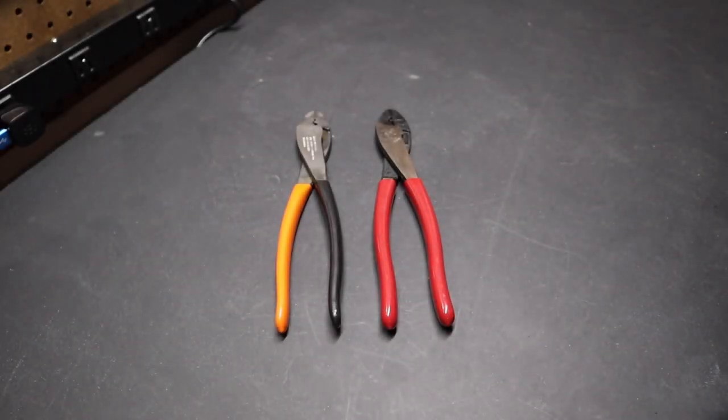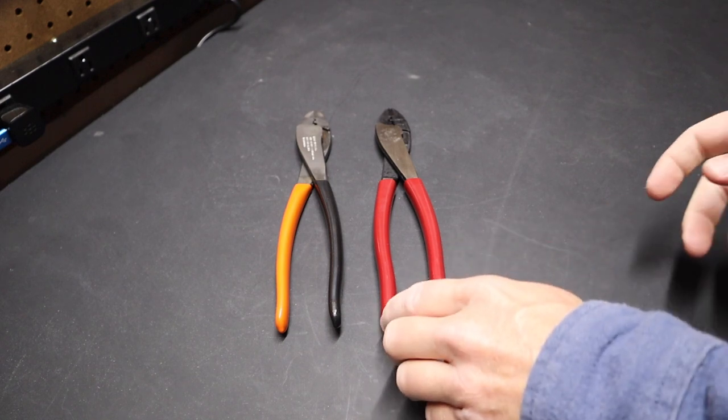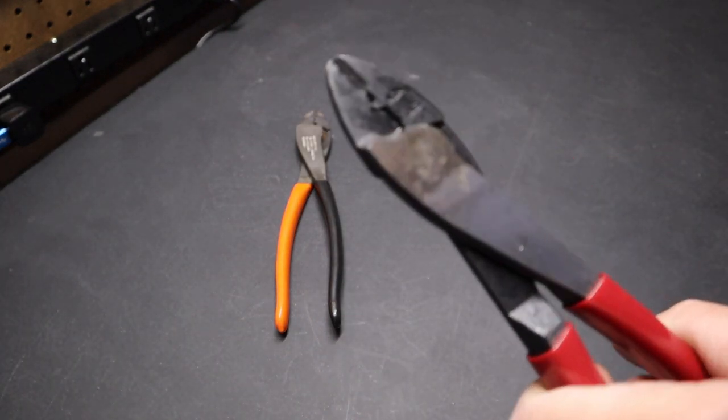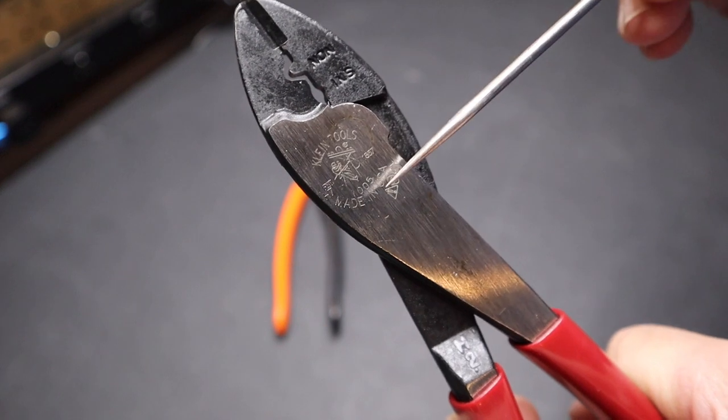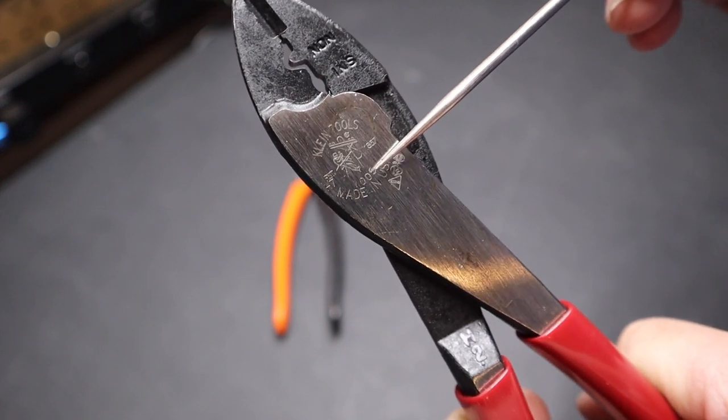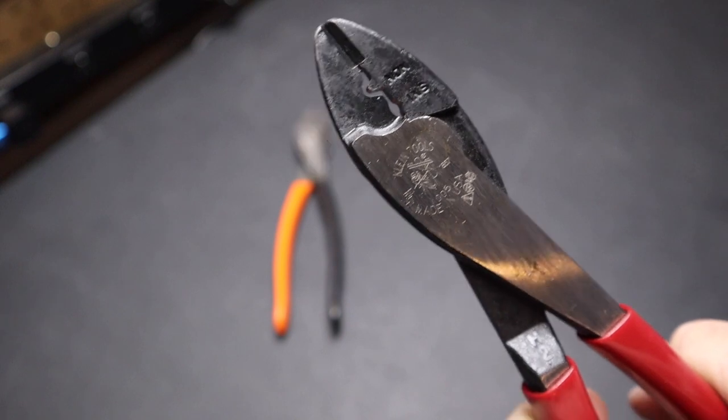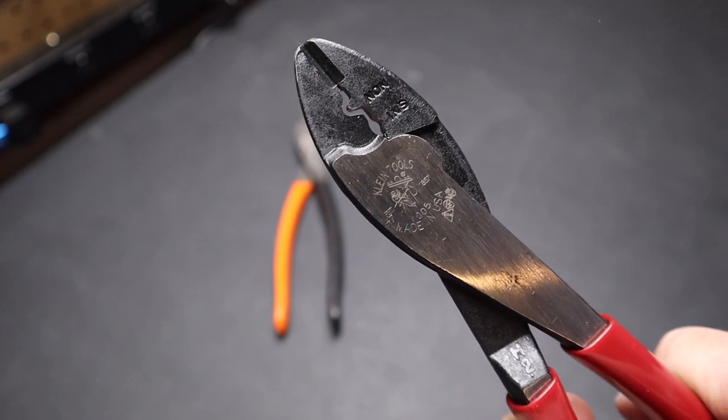Hi folks, welcome back to the shop. Today I want to talk about what I think are the best crimpers on the market. I've done a video before on these Klein Tools 1005 model number crimpers, excellent crimpers made in the USA by Klein Tools, and they are excellent crimpers.